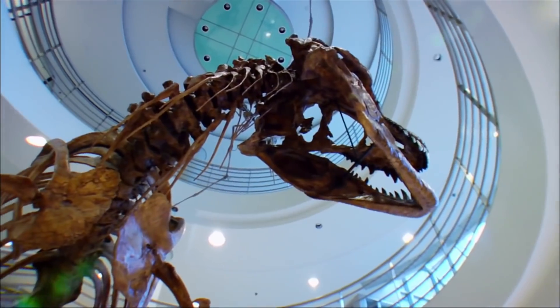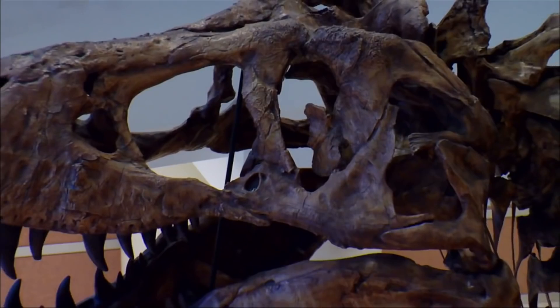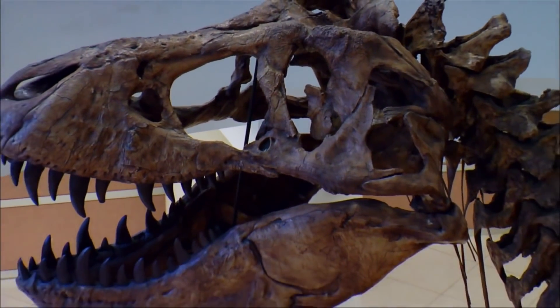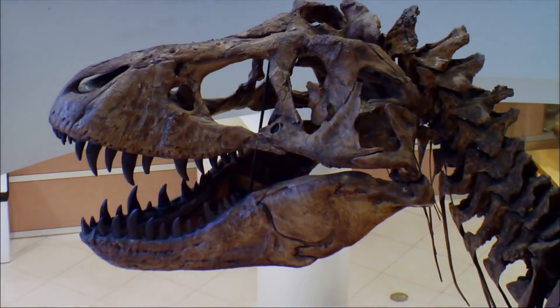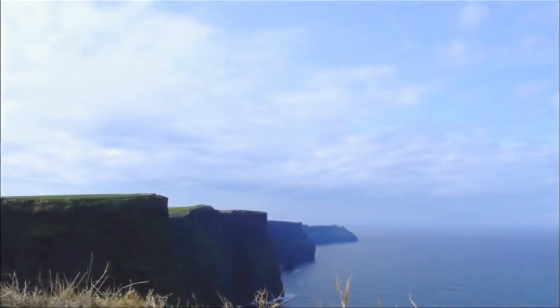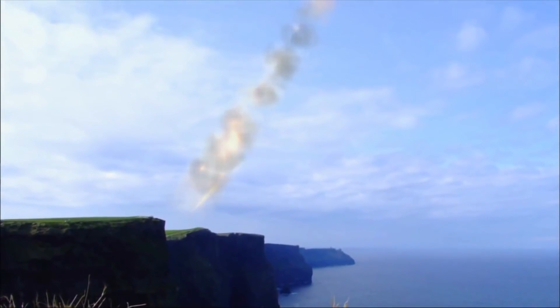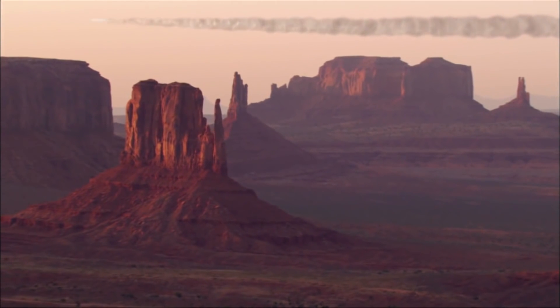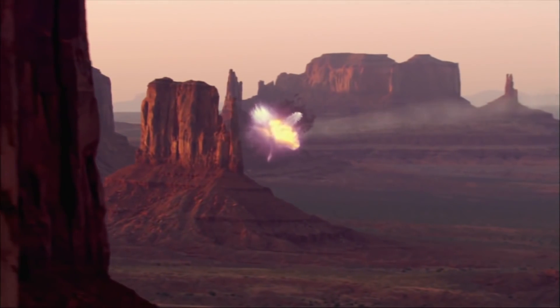Some scientists believe these periods of death and destruction happen like clockwork. Some paleontologists found a very strange pattern. What they found were the great extinctions, such as the ones that killed the dinosaurs, didn't happen at random times. But seemed to occur on a regular time schedule. That was very strange. They were disappearing every 26 million years. It was begging for an explanation.